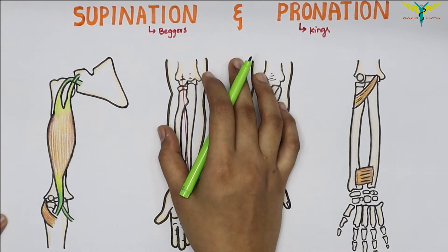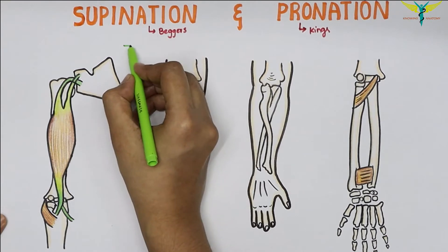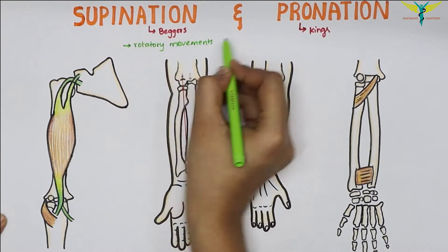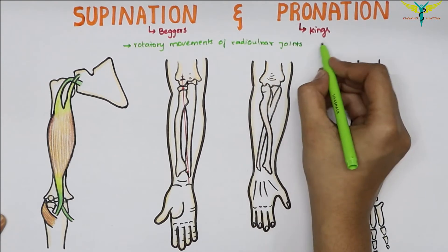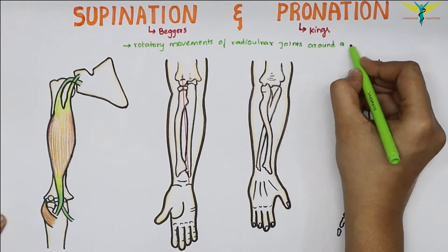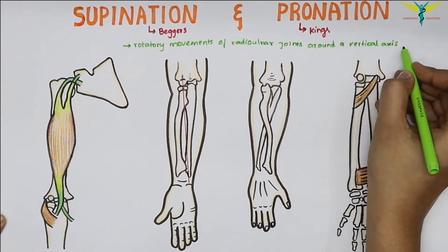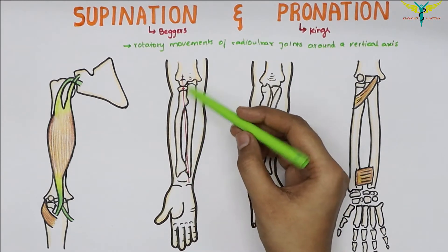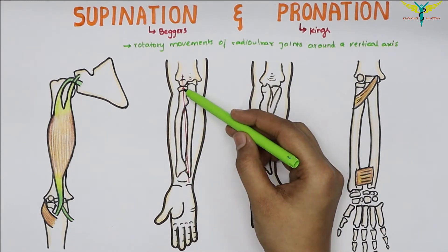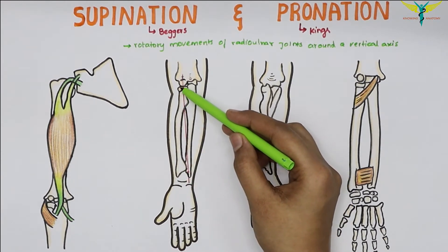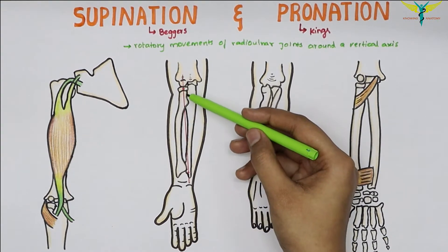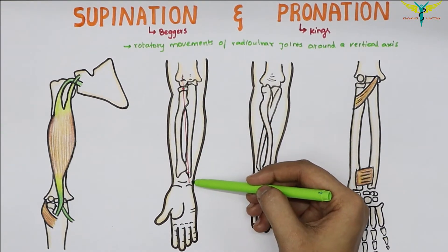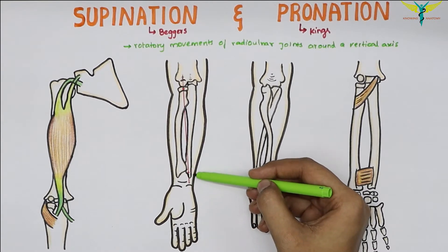These rotatory movements occur around a vertical axis that is oblique. It passes from the head of the radius above, down to the base of the styloid process of the ulna below.